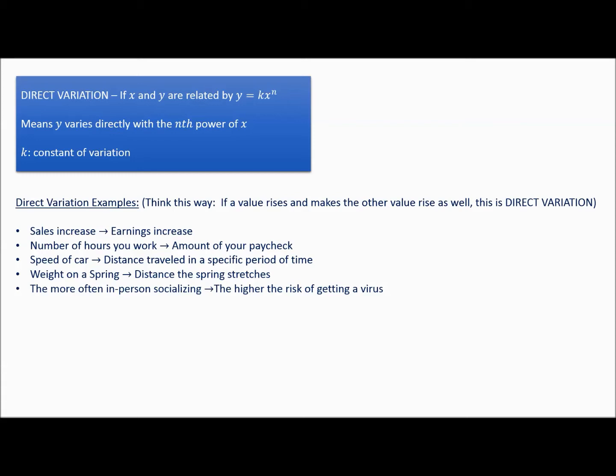Another example of direct variation: the number of hours you work and the amount of your paycheck. If you're paid by the hour, the more hours you work the higher your paycheck, and the less hours you work the lower your paycheck. Another example is the speed of your car and the distance you travel. Also, weight on a spring and the distance the spring stretches — the heavier the thing you hang, the more the spring stretches.